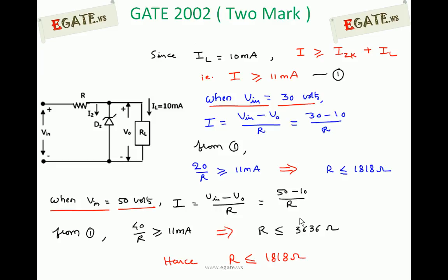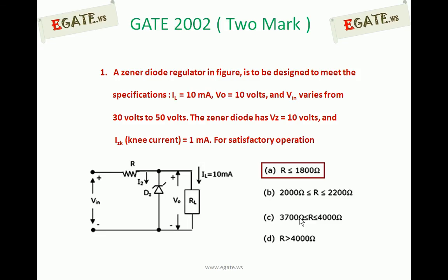So the correct option for the given problem, the approximate answer, is R ≤ 1800Ω. So the correct option is A.